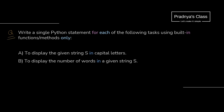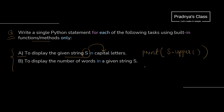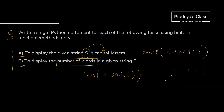Here we have a theory question where we need to mention the built-in functions or methods for the given instructions. First: to display the given string in capital letters — we use the upper() method on the string and wrap it in a print function. Second: to display the number of words — we use the split() method, which splits the string based on space giving us a list of words, then apply the len() function on that list to get the number of words, and print it.